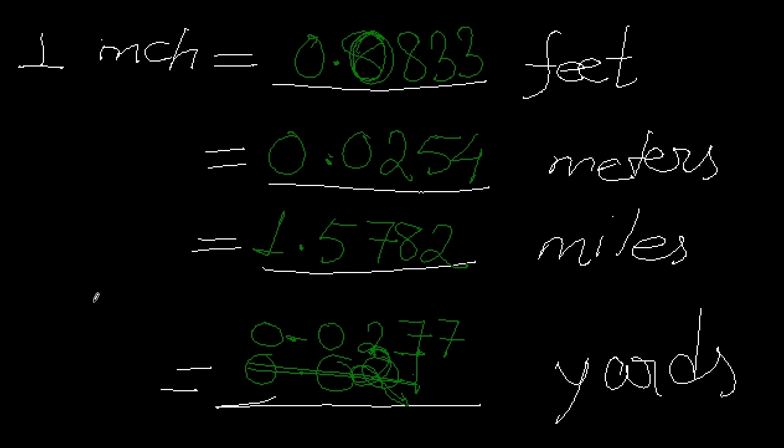Now we know the relations. If you need to find out any other amount, like 5 inches equals how much feet, or 7 inches equals how many meters, you just multiply that number with the numbers from the relations. For example, if it's 5 inches equals how much feet, you multiply 5 with 0.0833, and similarly with any other numbers.